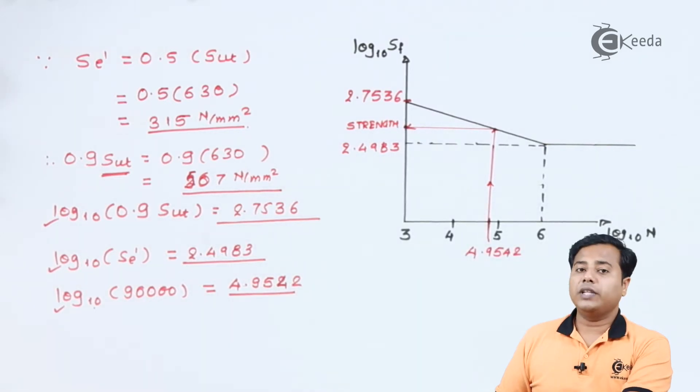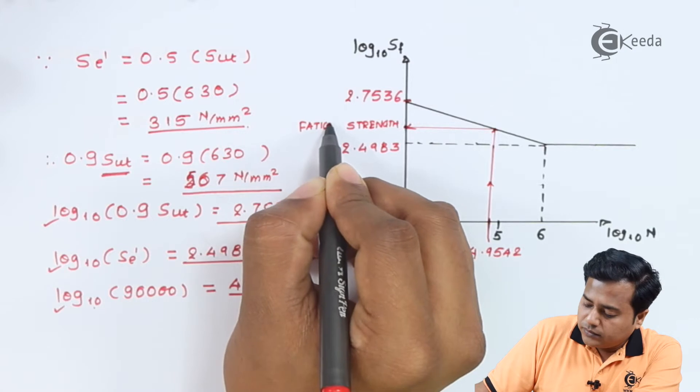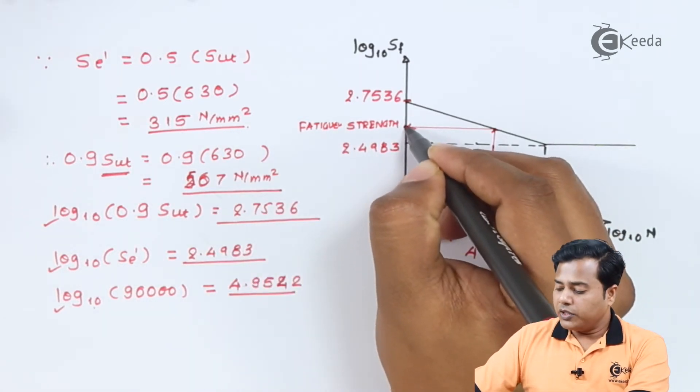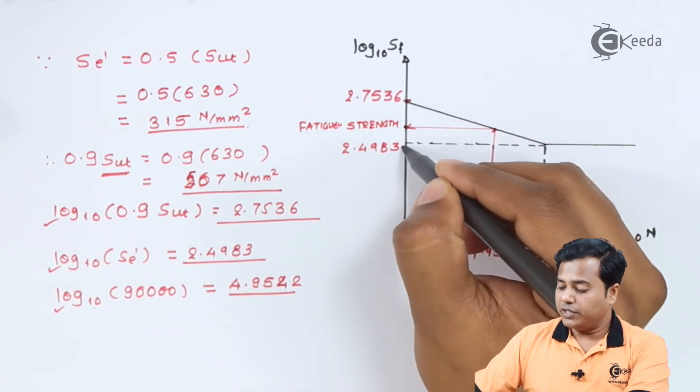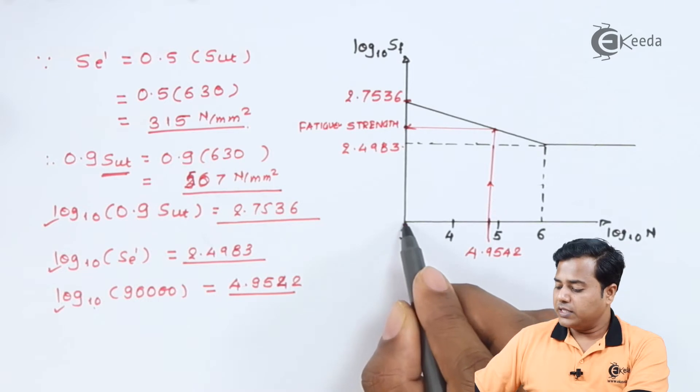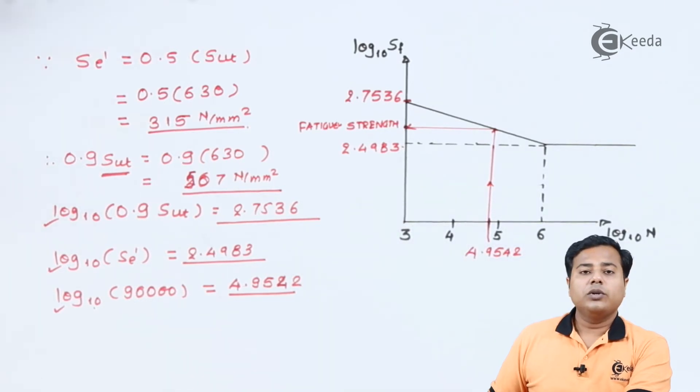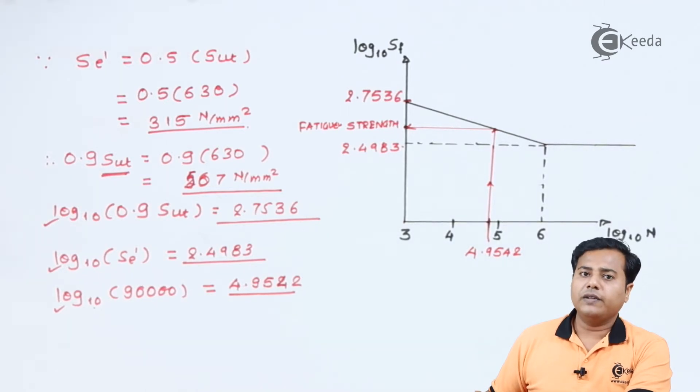And from that point, whatever value is evaluated, that is what our strength is. This is what the strength we need to find out. Let's call it fatigue strength. Of course, you can see that this particular value lies between these two extreme values at 10 raise to 3 and 10 raise to 6, and this particular value lies between these particular values. So basically we need to interpolate this value in order to find the value.